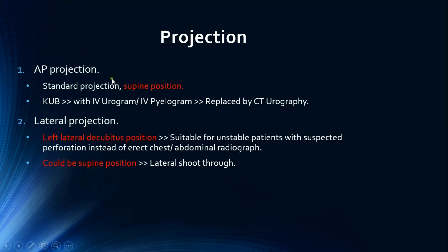IV urography has been largely replaced by CT urography. The second projection is the lateral projection. The left lateral decubitus position is used for unstable patients who cannot stand, such as in suspected perforation. When the patient is placed on their left side, free air ascends to the top of the radiograph. The patient is placed on the left side so that free air appears against the solid liver rather than being confused with the gastric bubble.